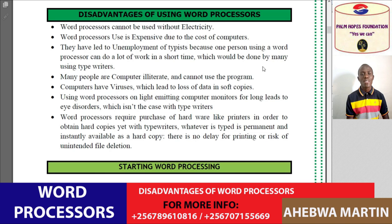Disadvantage number four: many people are computer illiterate and cannot use the program. Being illiterate here means that people do not have computer knowledge and cannot use the program. To use word processors, one must have learned computing from a teacher or someone who knows computers.